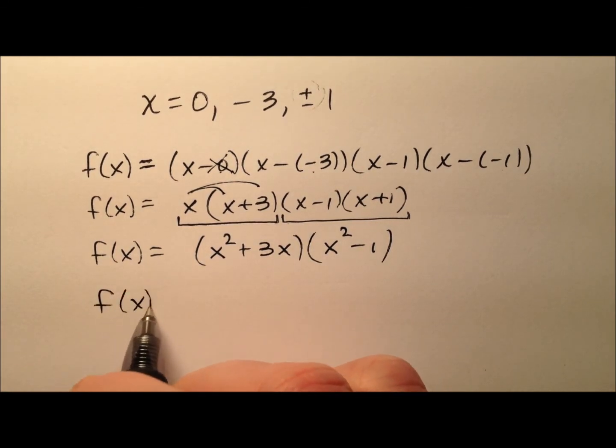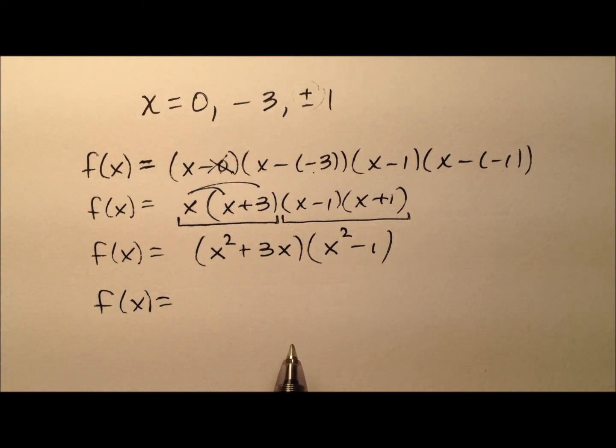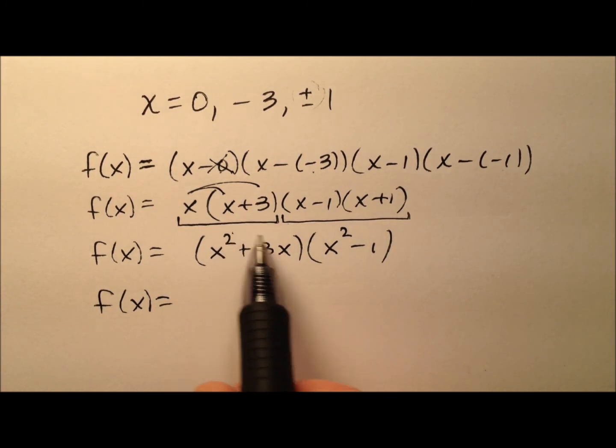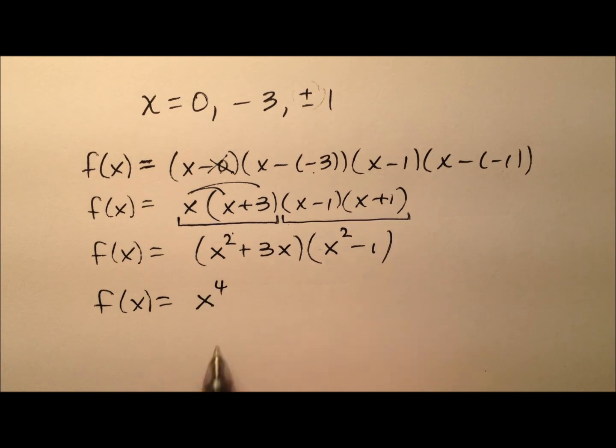So my only goal now is just to finish multiplying this through and make sure it's written in standard form. So the degree of each term needs to be in descending order. I'm going to start with my highest and go to my lowest. So x squared times x squared is x to the fourth,